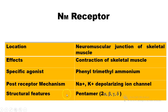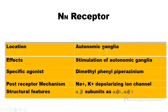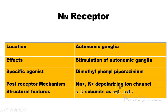The structural features of NM receptors contain a pentamer consisting of 2 alpha subunits, 1 beta unit, 1 gamma unit, and 1 delta unit. Next are NN receptors, located in the autonomic ganglia. Their effect is stimulation of autonomic ganglia. The specific agonist is dimethyl phenyl piperazinium. The post-receptor mechanism involves a sodium-potassium depolarizing ion channel. The structural features contain alpha and beta subunits: alpha2, beta2, alpha3, and beta3.